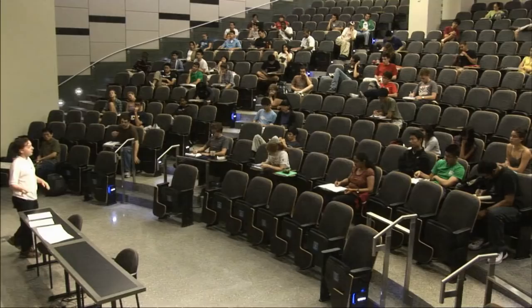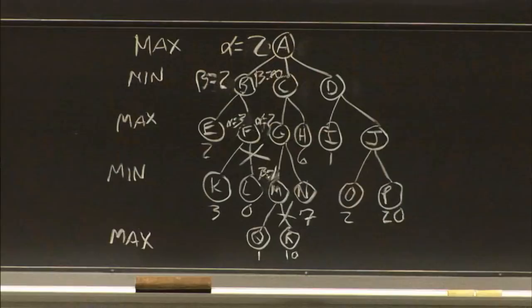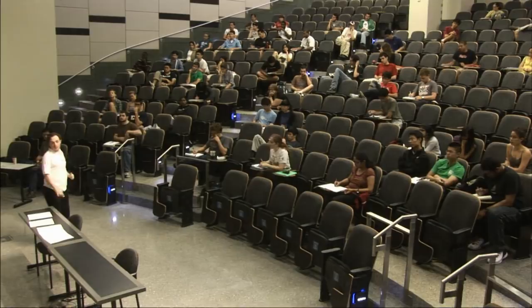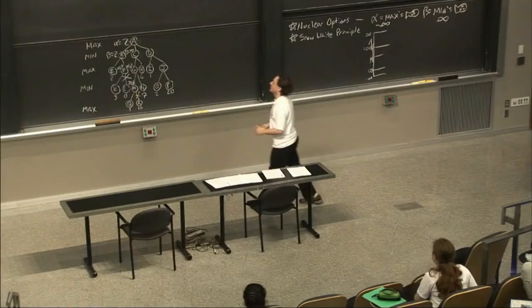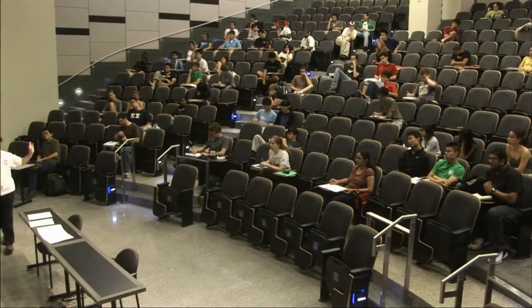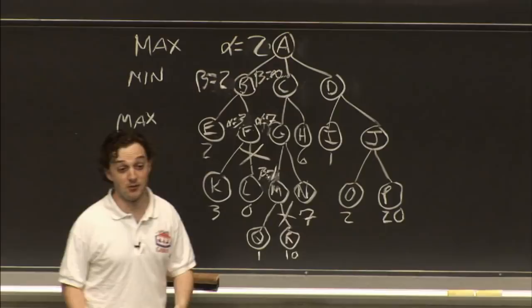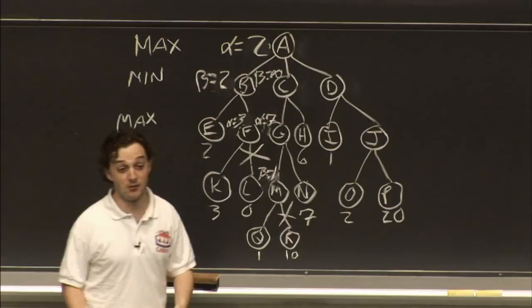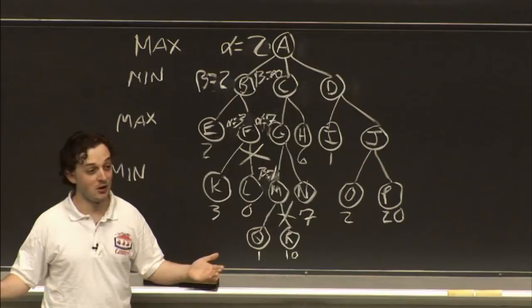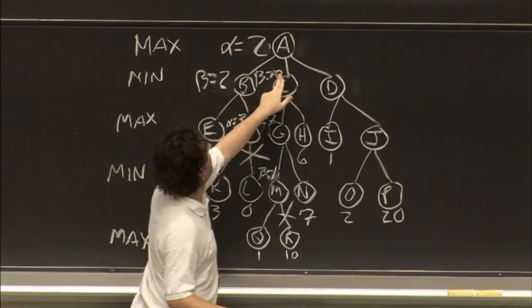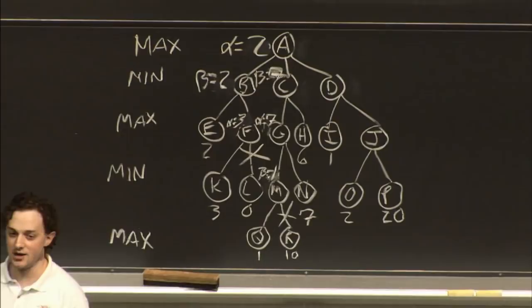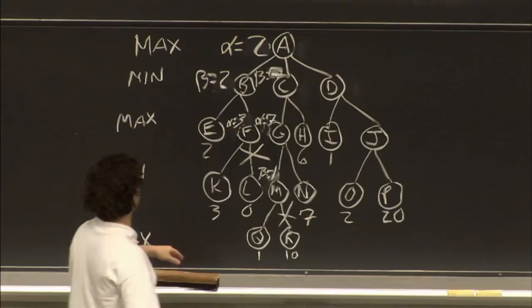The maximizer goes to N instead. N has a value of 7, so G's alpha becomes 7 — 7 is better than 2. The minimizer at C, seeing 7 from G, updates beta to 7. Then C checks H, which has a value of 6. C takes the 6 — it's lower than 7. All the way back up, A sees 6 coming out of C and updates alpha to 6.